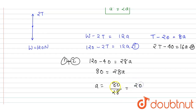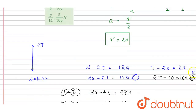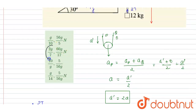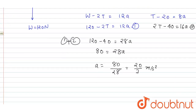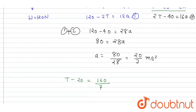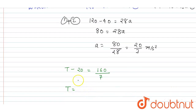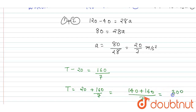So 80 equals 28a. Cancel by 4 to get a equals 20 by 7, which is 2g by 7. Now confirm the tension: T minus 20 equals 8a. Substituting 8a equals 8 times 20/7 equals 160 by 7. So T equals 20 plus 160 by 7, which is 140 plus 160 by 7, giving T equals 300 by 7 newtons.